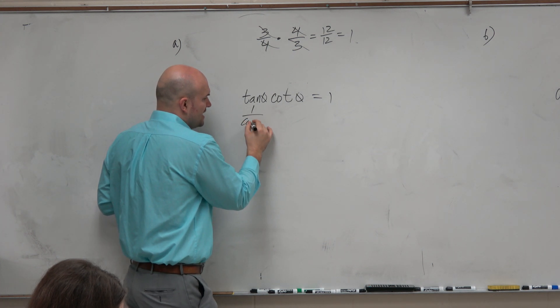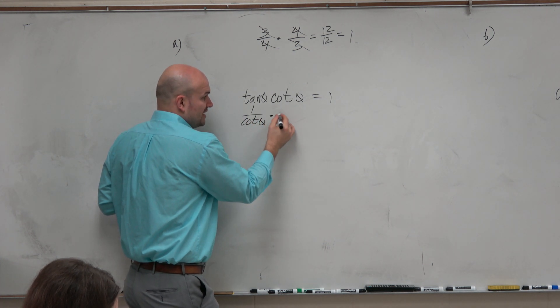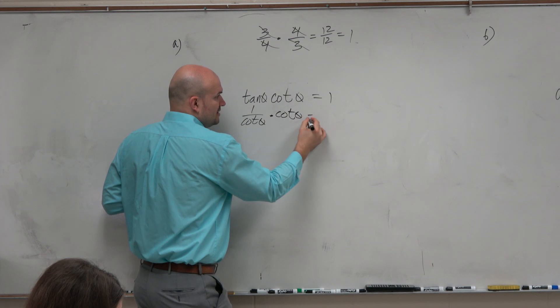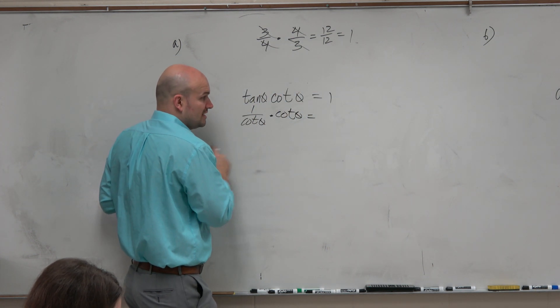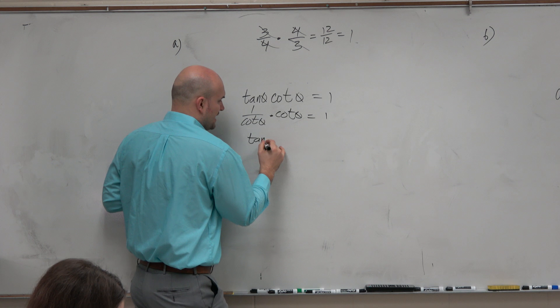But we could rewrite this as 1 over cotangent of theta times cotangent of theta based on the reciprocal identities. We could keep tangent the same.